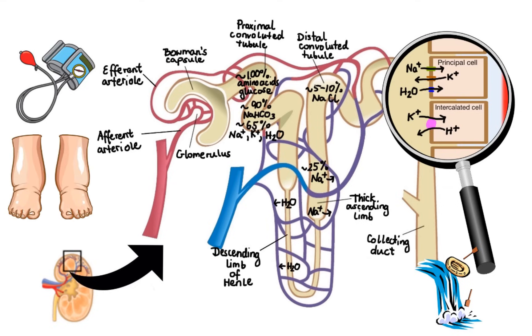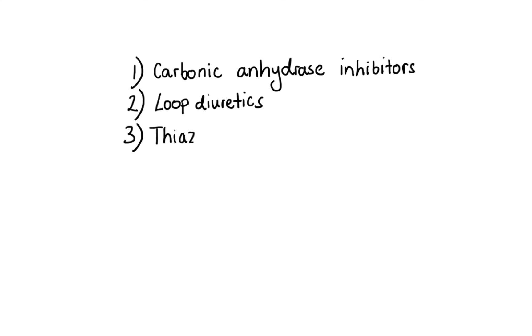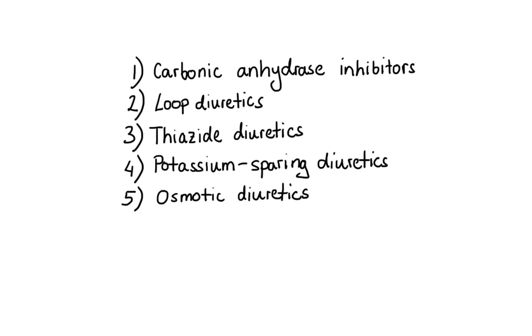Now based on their mechanism of action, diuretics can be divided into five major classes. These are carbonic anhydrase inhibitors, loop diuretics, thiazide diuretics, potassium sparing diuretics, and osmotic diuretics. So let's look at each class in more detail, starting with carbonic anhydrase inhibitors.